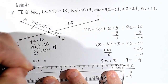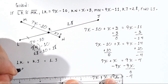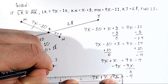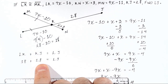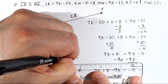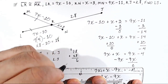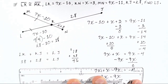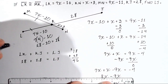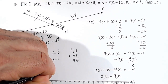Using segment addition: LK plus KJ equals LJ. That's 18 plus 28. Adding: 8 plus 8 is 16, carry the 1; 1 plus 2 plus 1 equals 4. So the total distance from L to J is 46. Therefore LJ equals 46.